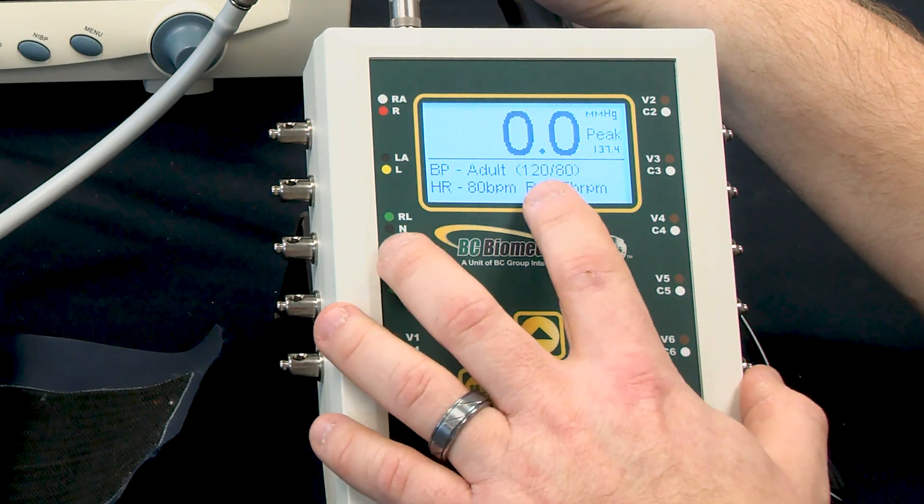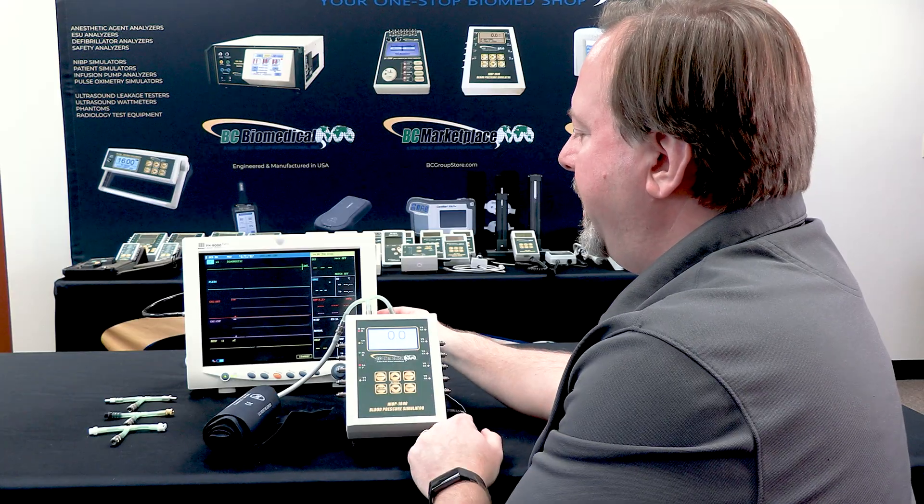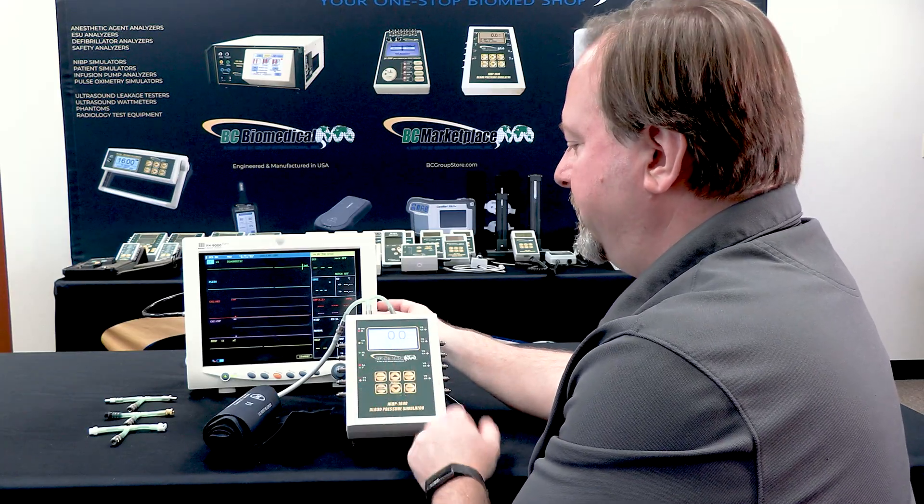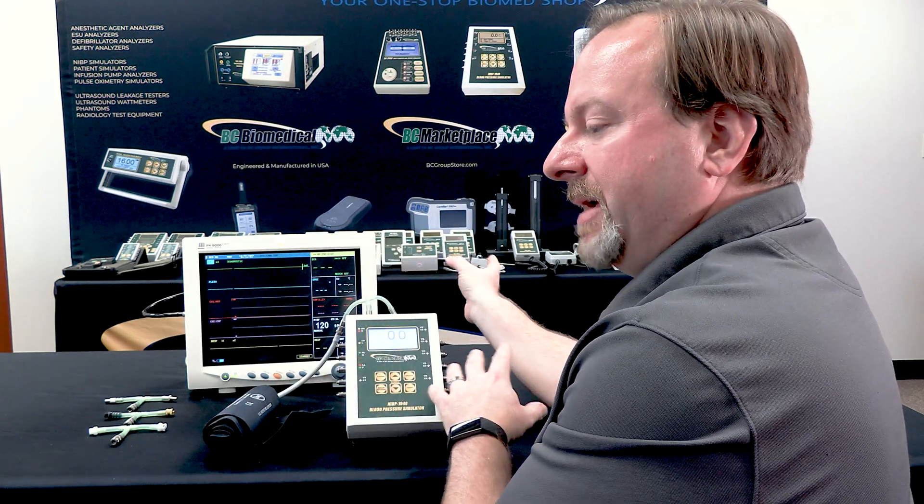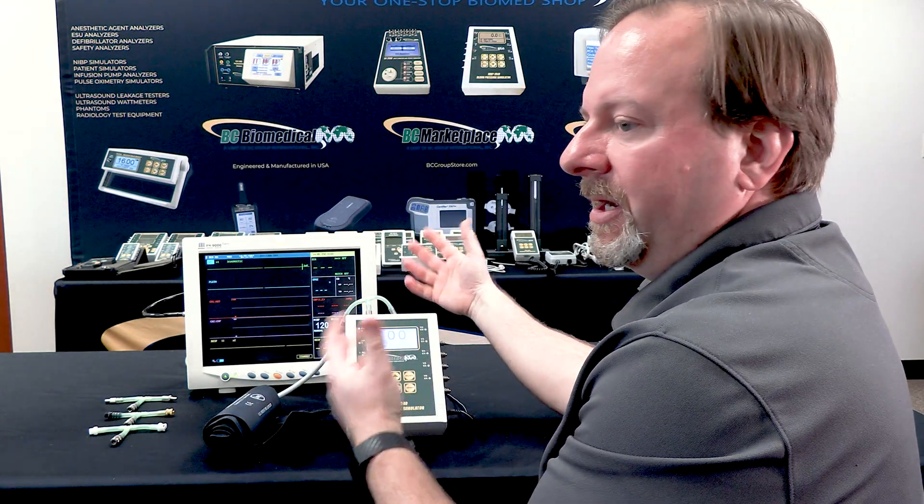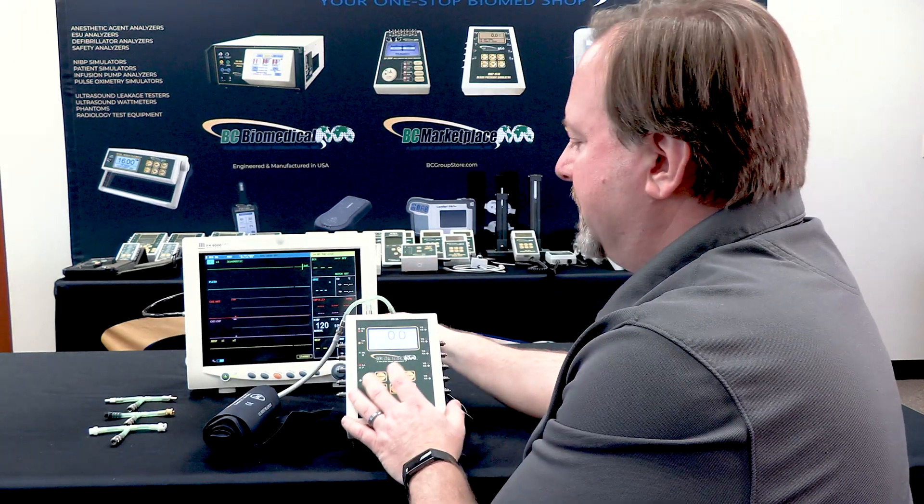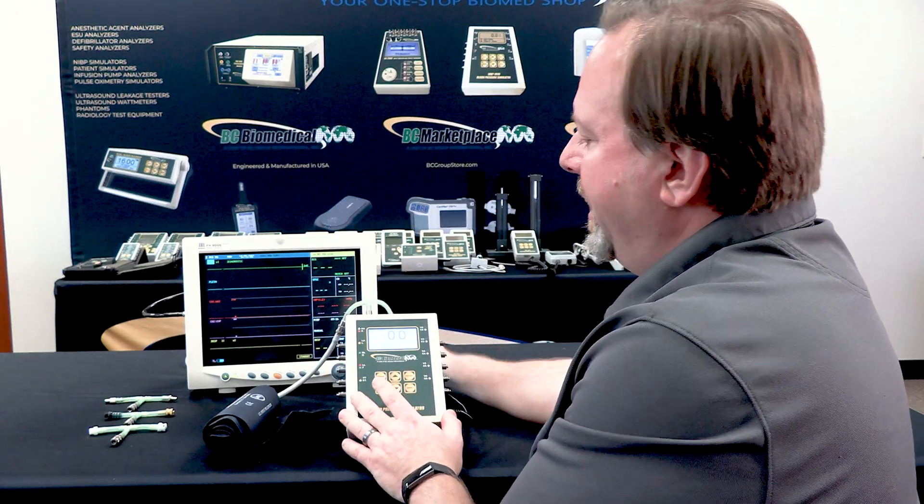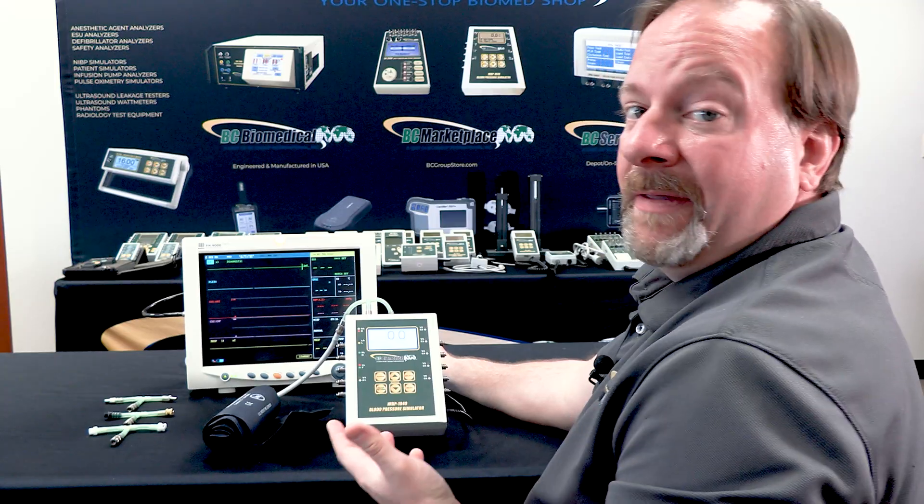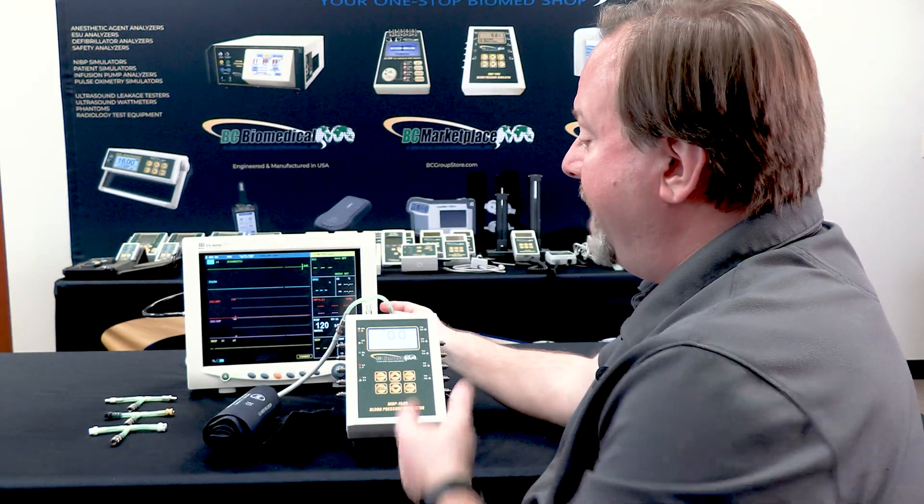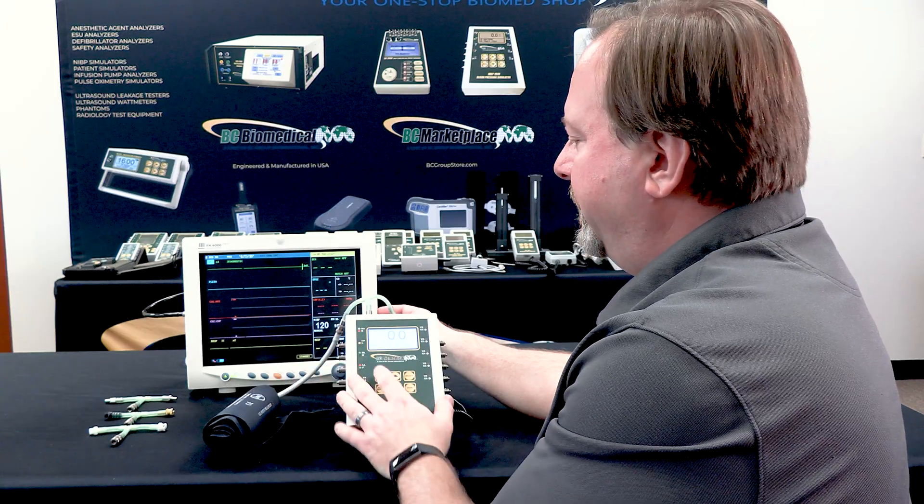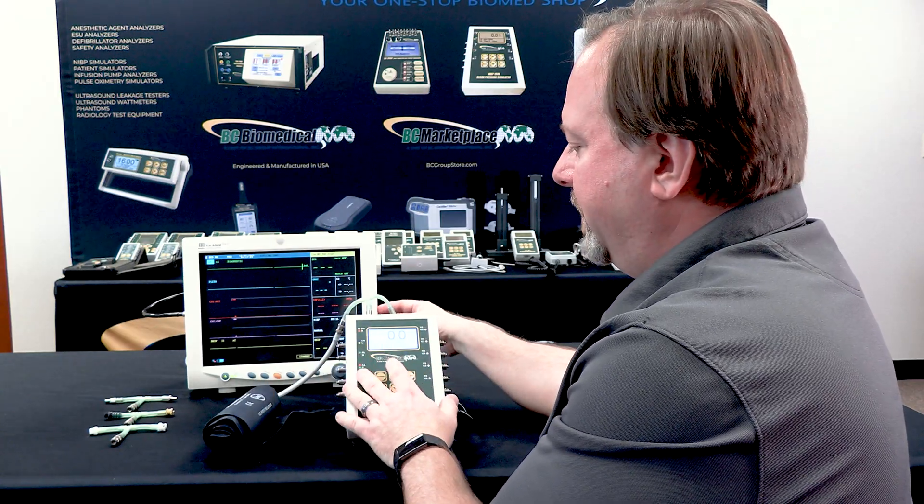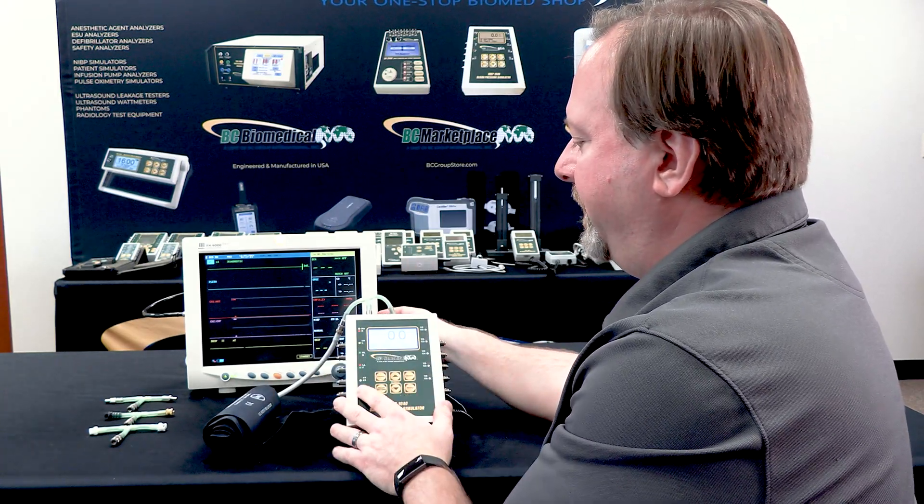In this case, it was 120 over 80 that was set, and we had 120 over 81 that was measured. Now all of the Mindray monitors should measure the same. The same goes for GE or Philips or whichever manufacturer you're testing. And you may want to have your measurement match exactly what you're simulating, so you may have a set of offsets for each particular manufacturer.